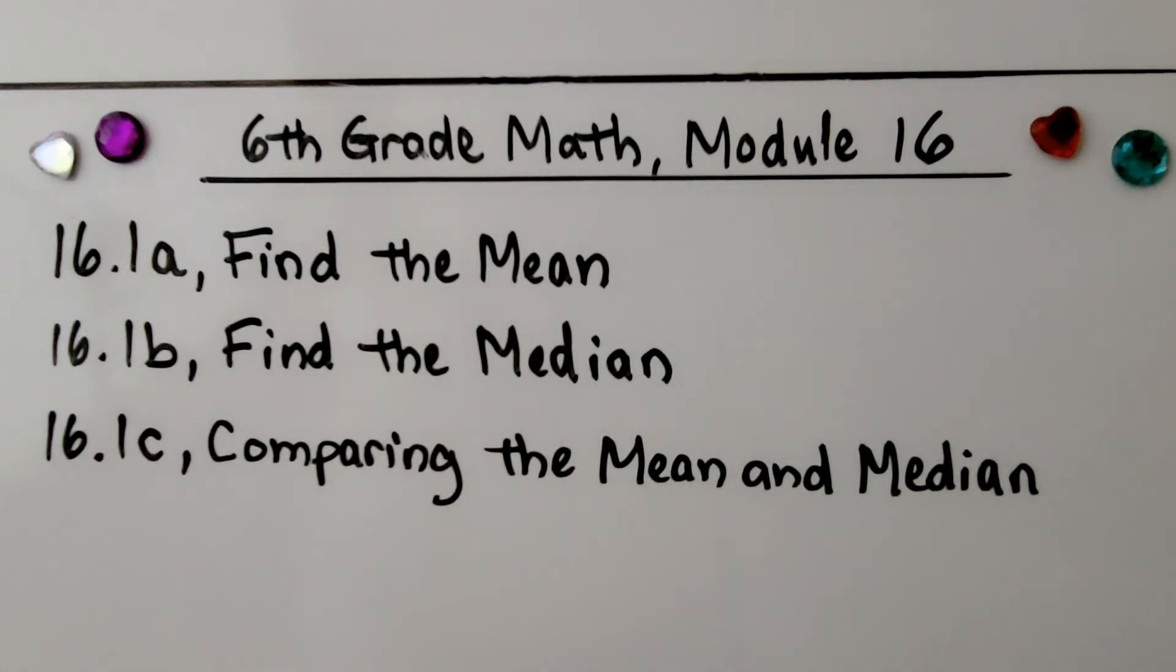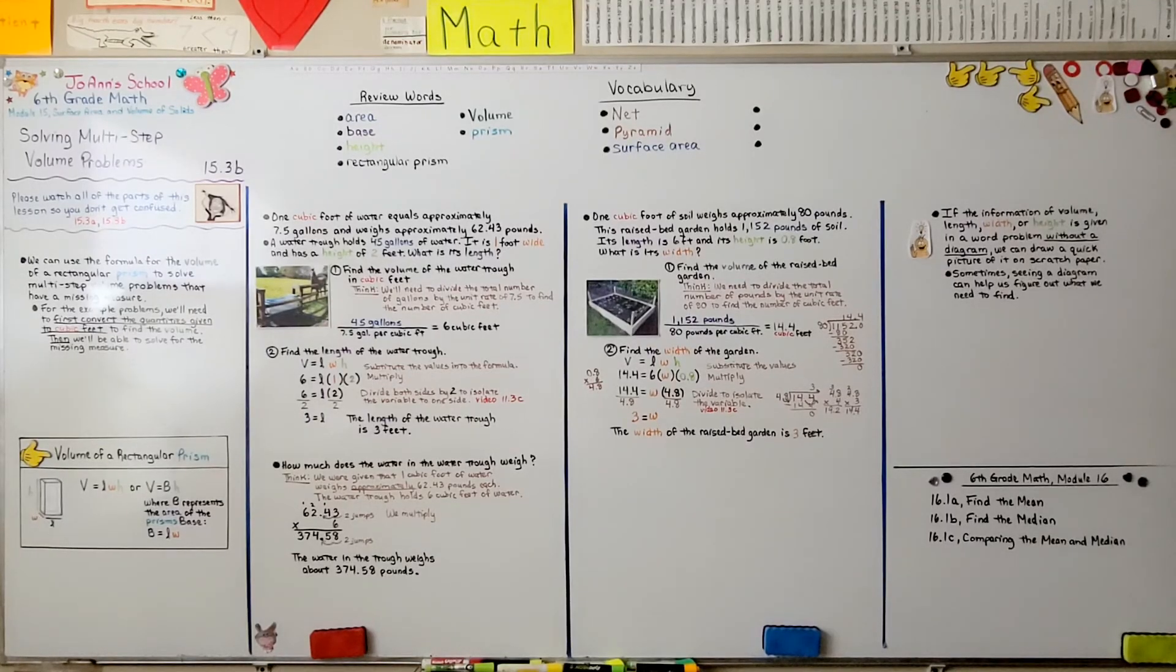We've got 16.1 split into three parts. The first one is how to find the mean. If you're still having problems working with inverse operations and dividing both sides to isolate a variable, go back and watch video 11.3c. It's linked in the description, and it's there to help you. Have a really nice day, and please join me for the next module. Bye.